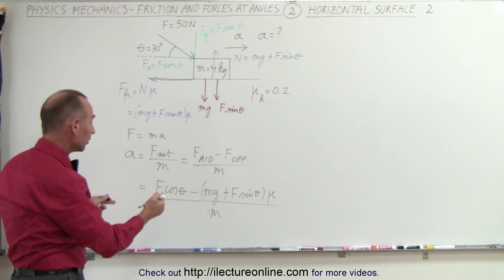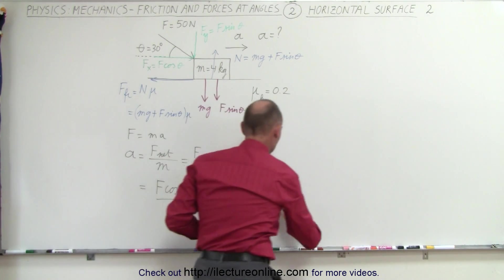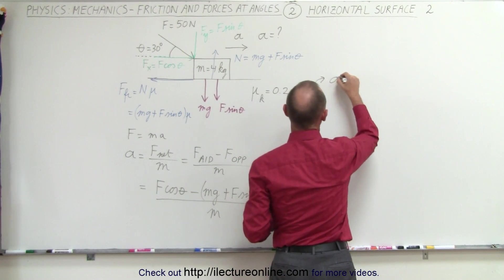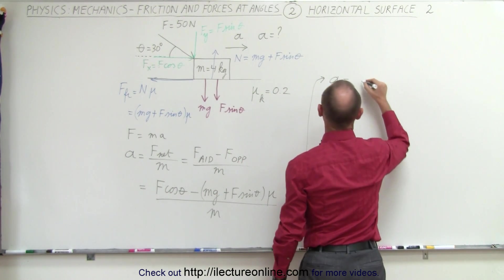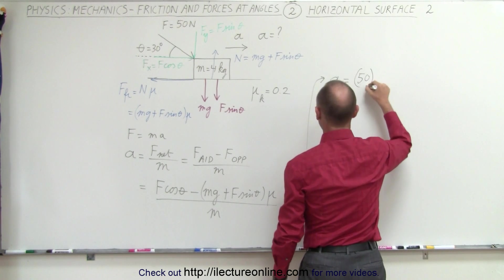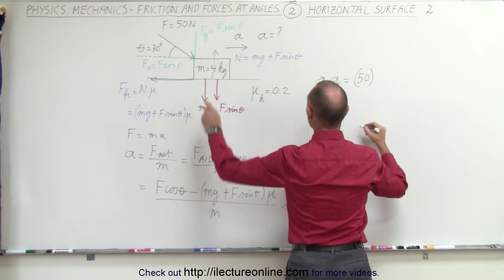All right, now we're ready to plug in the values. We can now say that the acceleration is going to be equal to the force, which is 50 newtons, multiplied times the cosine of theta, the cosine of 30 degrees.